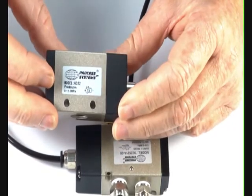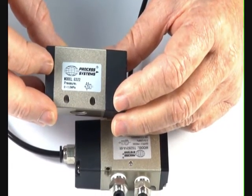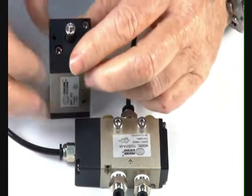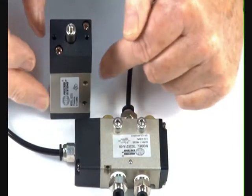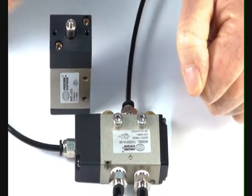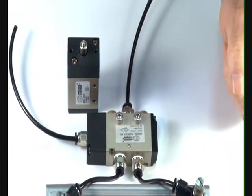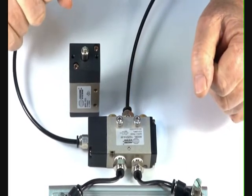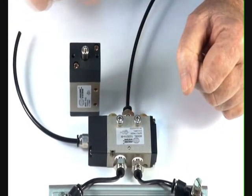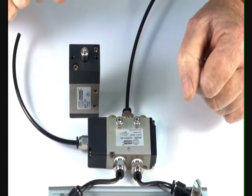Now this valve here can also be piped up normally open or normally closed. In other words, when the air is on the inlet port at the base, there's no air coming through until the valve is operated. If you put it into the other port, when the valve has not been operated, the air is passing through. That's a normally open situation.